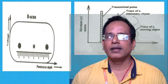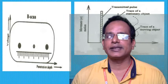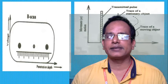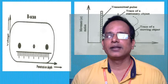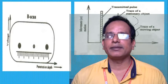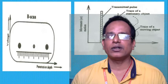B-scan, also called brightness mode scan, gives two-dimensional images. To obtain two-dimensional images, an array of transducers must be used simultaneously, producing 2D images. The principle of B-scan is the same as A-scan except for a small difference: in B-scan the transducer can be moved rather than kept in a fixed position. As a result, the echoes are displayed as dots on the screen, as you can see in the diagram.